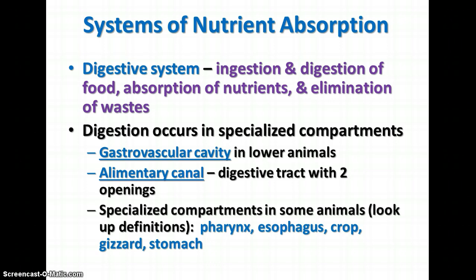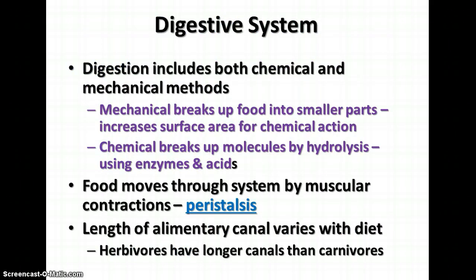We're going to talk about what happens in nutrient absorption and digestion. There are chemical and mechanical methods of digestion. Mechanical digestion breaks up food into smaller parts, which increases the surface area on which chemicals can act. Then there are chemicals that break up molecules by hydrolysis using enzymes and acids — the same processes we discussed for organic molecules like proteins, carbohydrates, and nucleic acids.